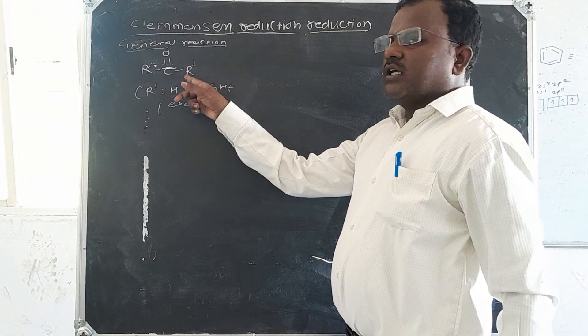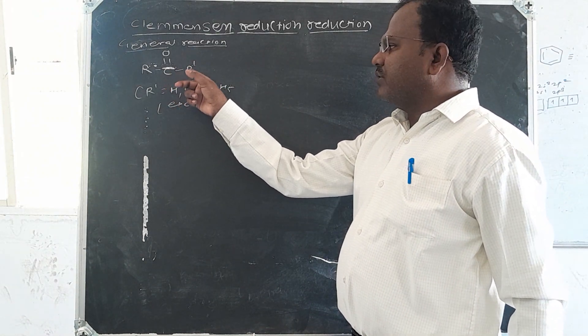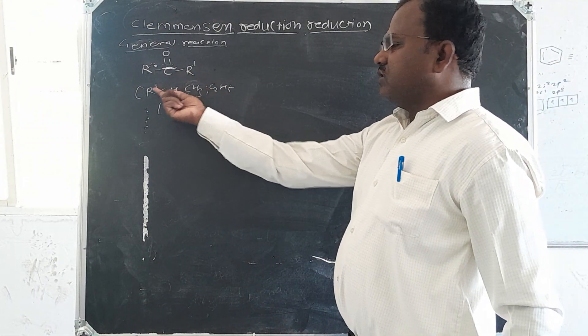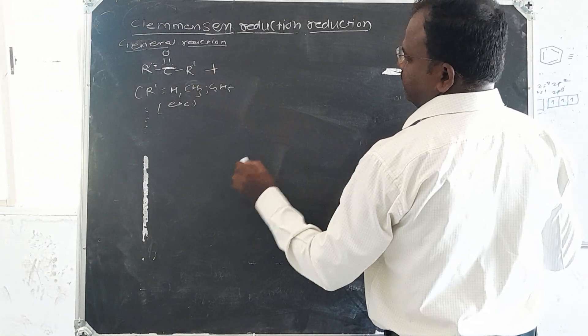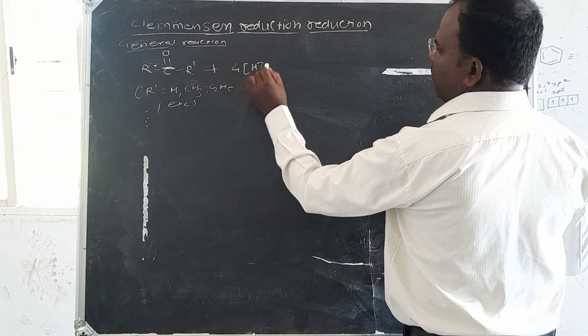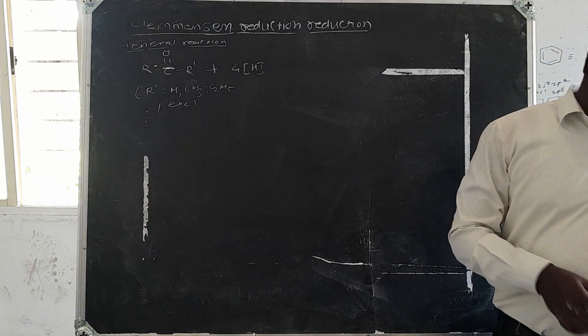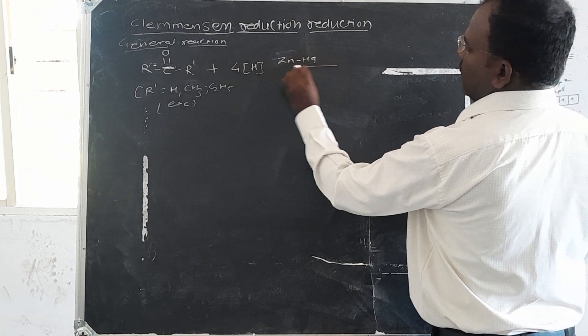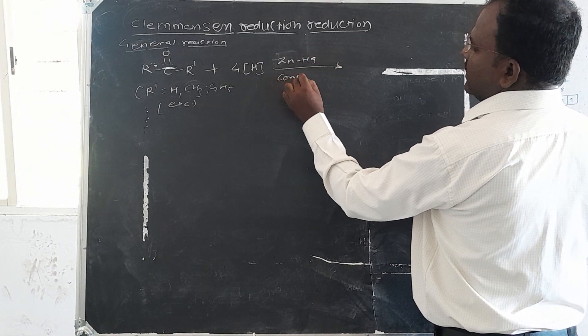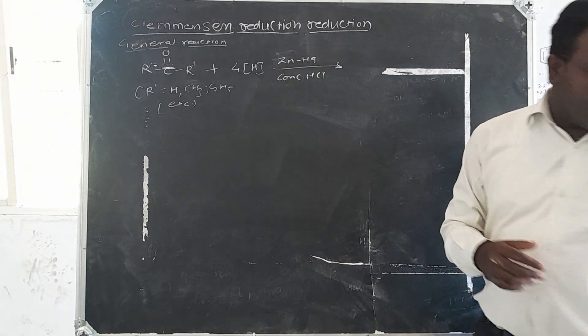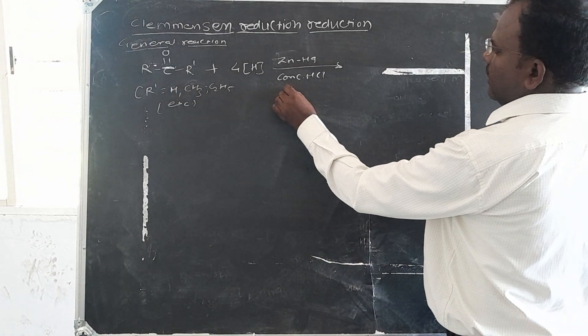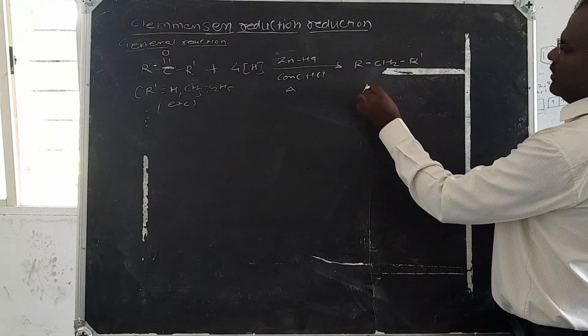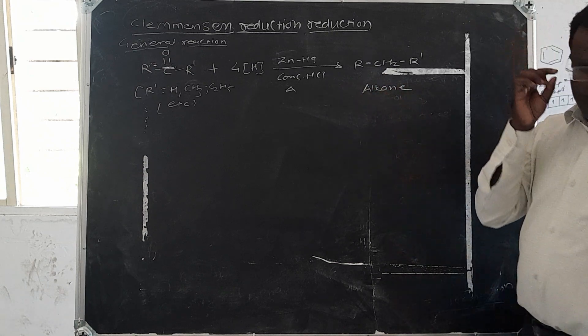The ketone will react with hydrogen molecules in the presence of zinc amalgam and concentrated HCl. This compound gives the formation of alkanes from the carbonyl.